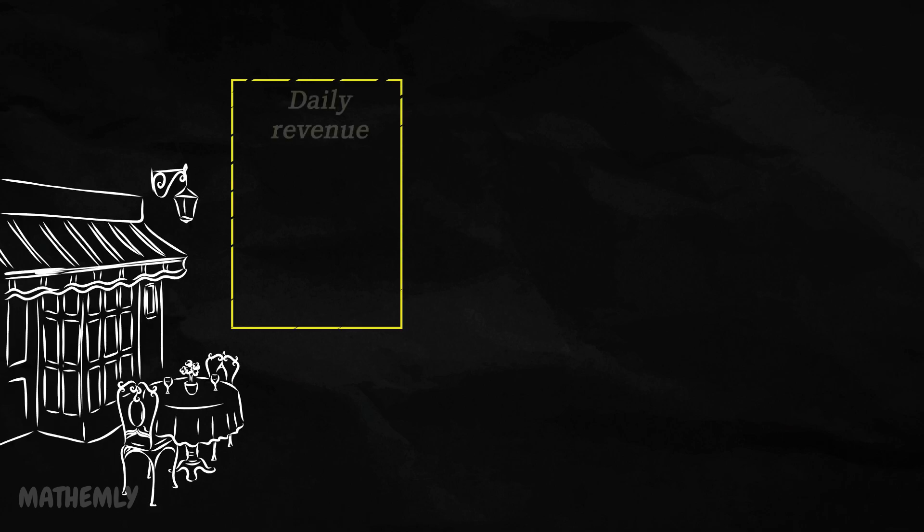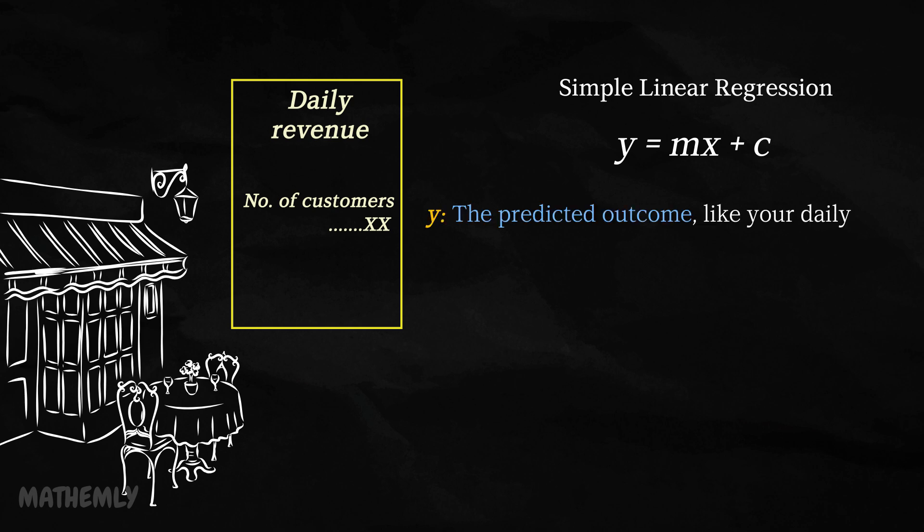Let's simplify this with an example. Imagine you're running a cafe and want to predict daily revenue based on the number of customers. Simple linear regression helps you establish this relationship mathematically with the formula y equals mx plus c. Here's what each term means. y, the predicted outcome, like your daily revenue.